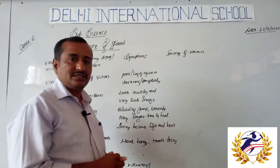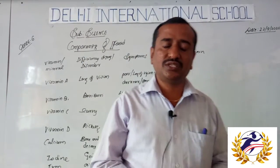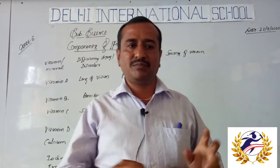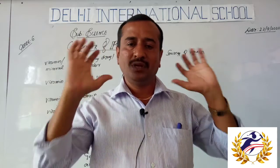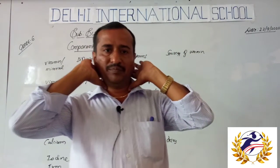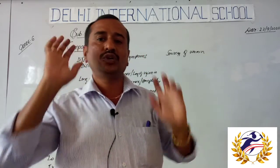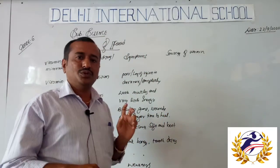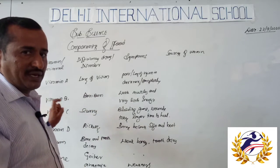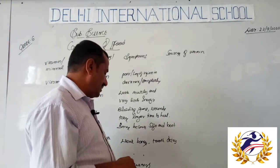Next is iodine. The disorder caused by iodine deficiency is called goiter. You might have observed in some people that the neck part becomes swollen — that is because of deficiency of the mineral iodine, and that condition is called goiter. Next comes iron deficiency, which leads to anemia. Anemia causes weakness in a person.